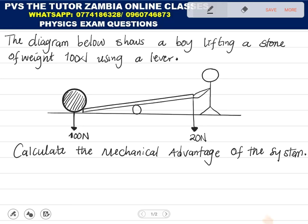Welcome to physics exam questions. The diagram below shows a boy lifting a stone of weight 100 newtons using a lever. This is the setup of the diagram — this one here is our boy, this one here is our stone, and here is a lever.